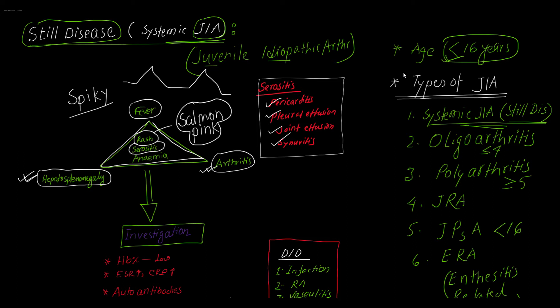Number three, patients have mild to moderate anemia. So the six features of Still's disease are: fever, hepatosplenomegaly, arthritis — and additionally — Salmon Pink rash, serositis, and anemia.